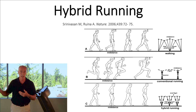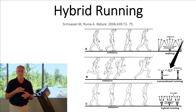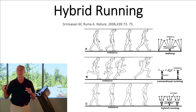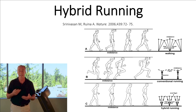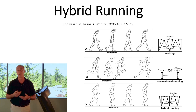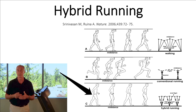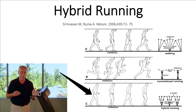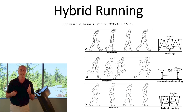But for the vast majority of runners in the middle of that graph, a type of running called hybrid running was the most metabolically efficient. In my opinion, it's what most recreational runners — especially 10- and 11-minute milers — intuitively do. It's called inverted pendular running: a combination of walking and running where you don't have big fluctuations in the center of mass.